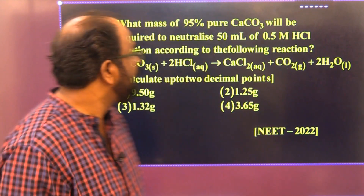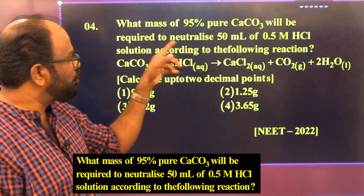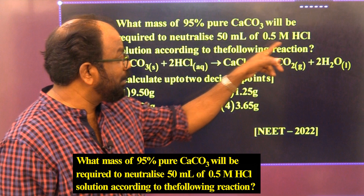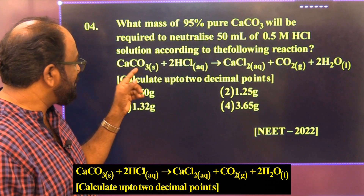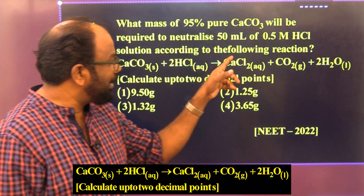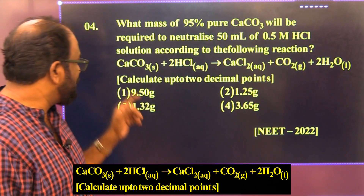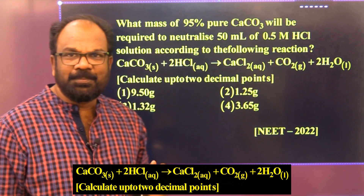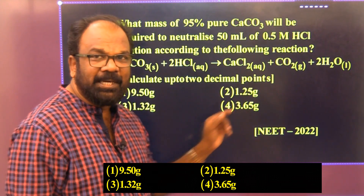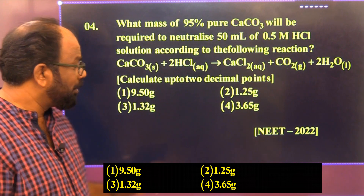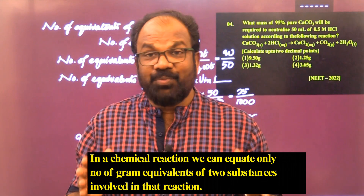Question 4: What mass of 95% pure calcium carbonate is required to neutralize 50 mL of 0.5 molar HCl solution according to the reaction: CaCO₃(s) + 2HCl(aq) → CaCl₂(aq) + CO₂(g) + 2H₂O(l)? Calculate to two decimal points. Option 1: 9.50g, Option 2: 1.25g, Option 3: 1.32g, Option 4: 3.65g.